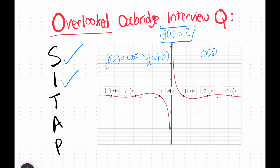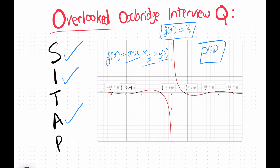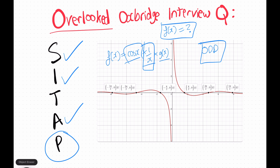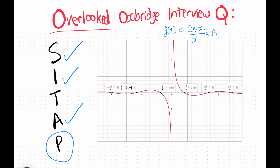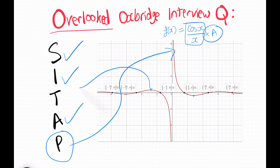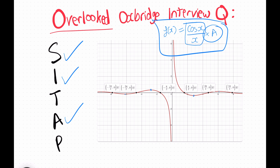Looking at pattern, the cosine term and 1 over x term represent all the characteristics of the function, so we don't need any additional multiplied function. Our final answer is y equals cosine of x over x, times some constant, since we don't know the exact values of the stationary points. If we were given those turning point values, we could work out the function exactly. So we worked through all the steps and identified our mystery function.